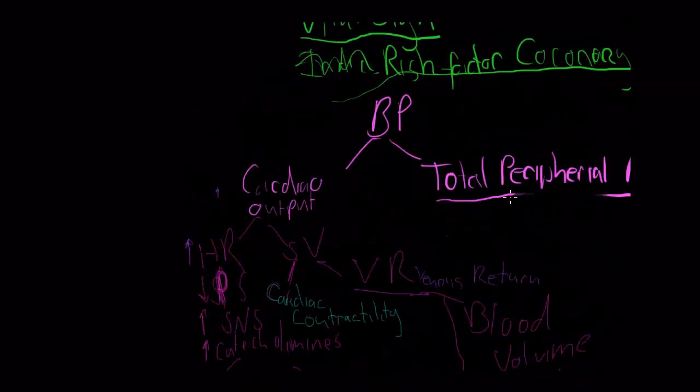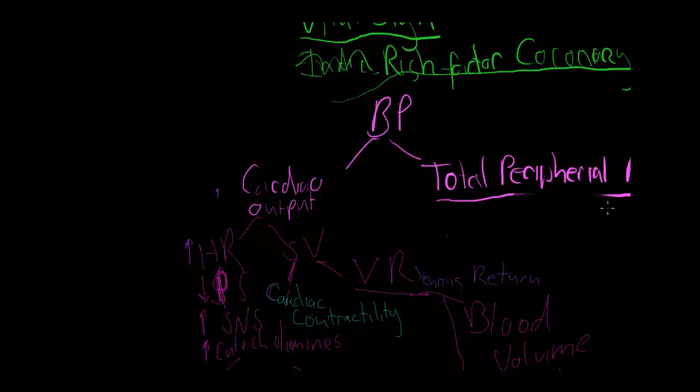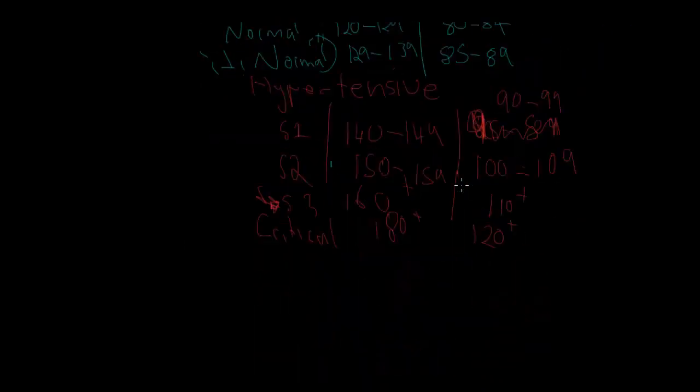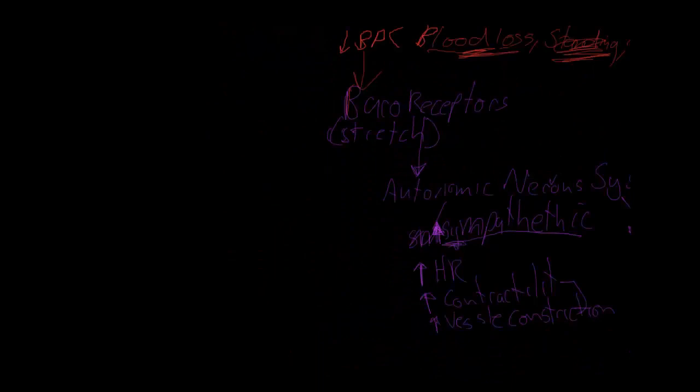And also, as I talked about before with the resistance, because of all the vasoconstriction, there's essentially less space wherein the blood has to sit. So, because there's less space but the same amount of blood, that will increase your resistance, which will increase your blood pressure. So, there you have it. That is how blood pressure is controlled acutely in the situation of a decreased blood pressure.